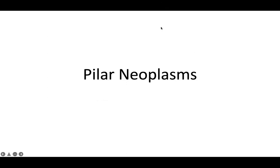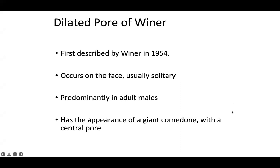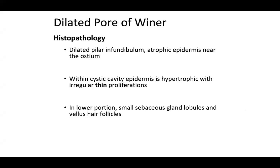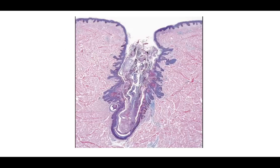Moving on to pilar neoplasms. We'll start with dilated pore of Winer, first described by Winer in 1954. It occurs on the face, usually solitary, predominantly in adult males, and has the appearance of a giant comedone with a central pore. On histopathology, you're going to look for a dilated pilar infundibulum, atrophic epidermis near the ostium, and within a cystic cavity, hypertrophy with irregular thin proliferations. In the lower portion, you'll see small sebaceous gland lobules and rudimentary hair follicles. Here's a dilated pore of Winer — a thick dilated ostia with lots of keratin, reminiscent of an epidermal inclusion cyst.